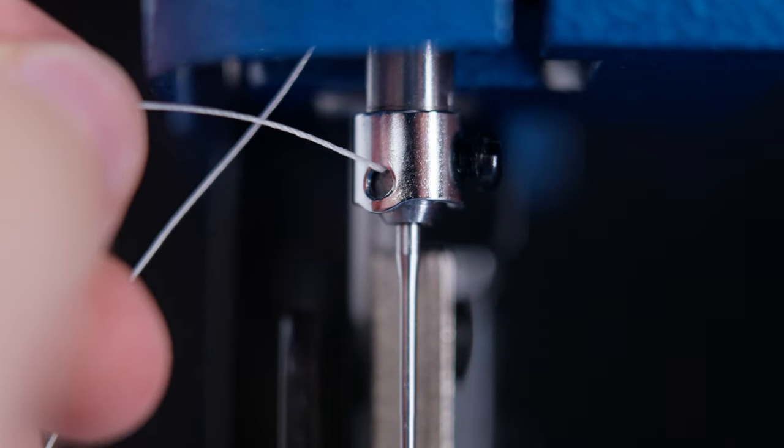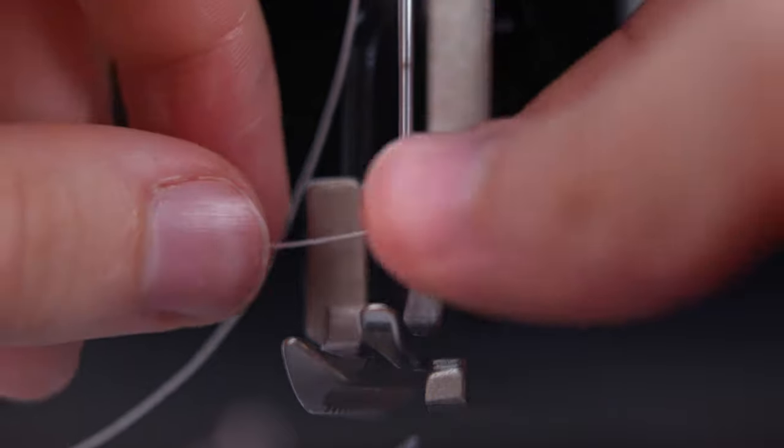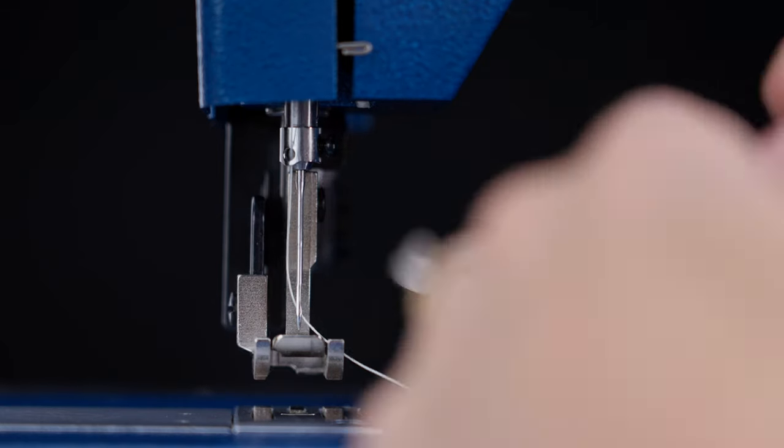Lastly, pass the thread through the needle bar thread guide hole, down through the needle eye from left to right, and then down through the cutout in the presser foot.